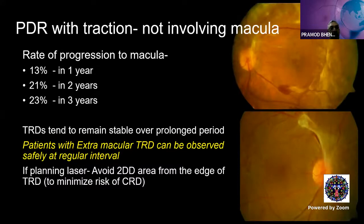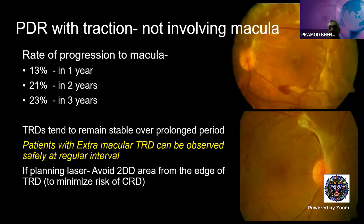For PDR with traction but macula not yet involved: tractional detachment tends to remain stable over a prolonged period, with a 23% incidence of progression to the macula over three years. Extra-macular TRD can be safely observed at regular intervals. If planning laser in such eyes, burns should be at least two disc areas away from the edge of the TRD to minimize the risk of converting it to a combined retinal detachment.